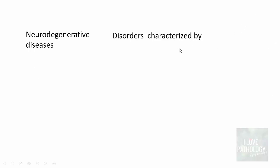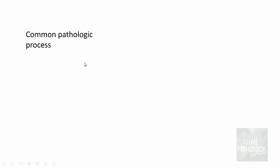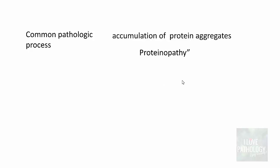So what are neurodegenerative diseases? These are disorders characterized by progressive loss of particular groups of neurons, and these groups of neurons often have a shared function. The common pathologic process in all neurodegenerative diseases is accumulation of protein aggregates, which is referred to as proteinopathies, caused by abnormal protein homeostasis.